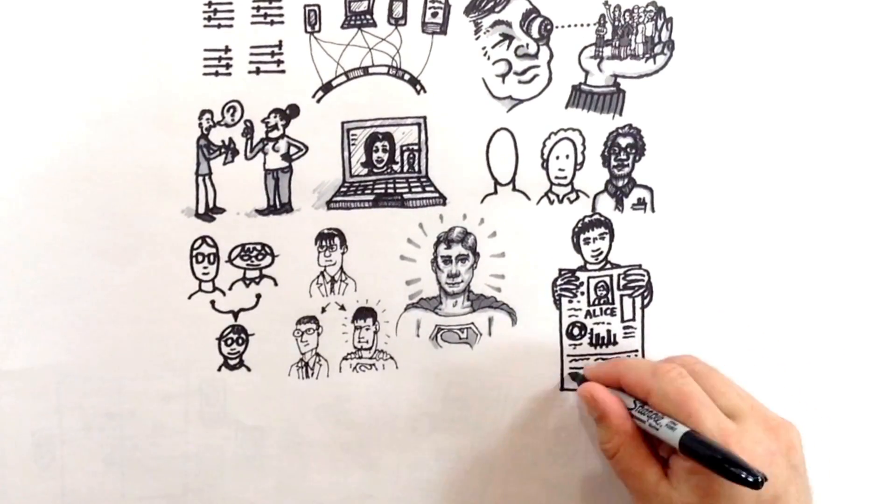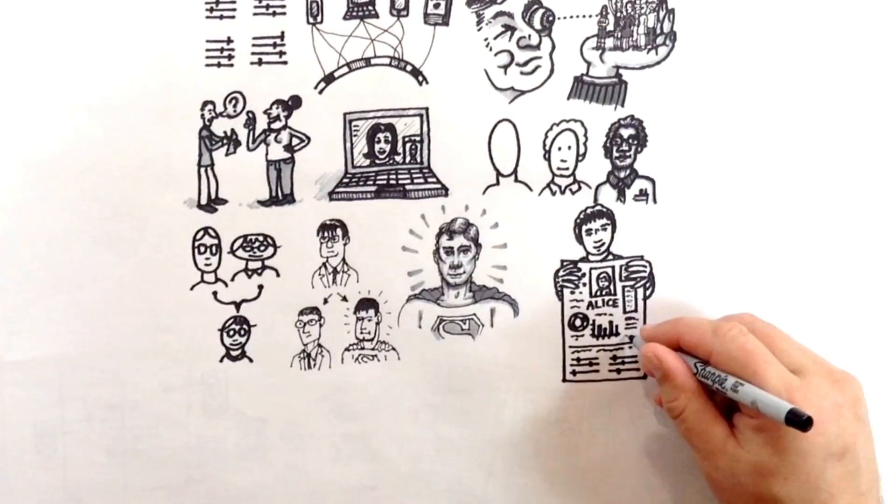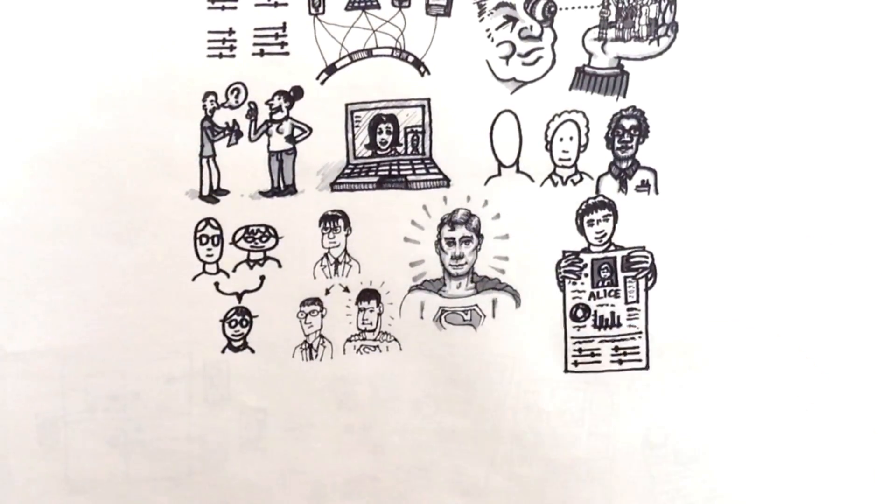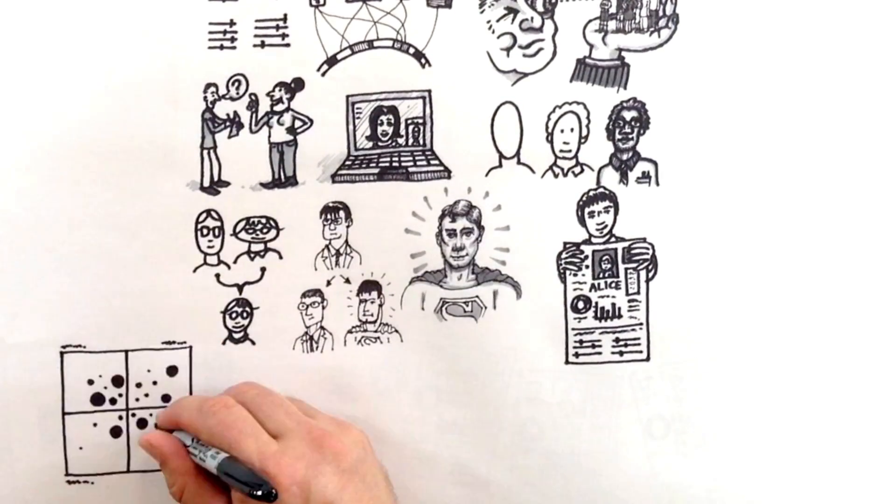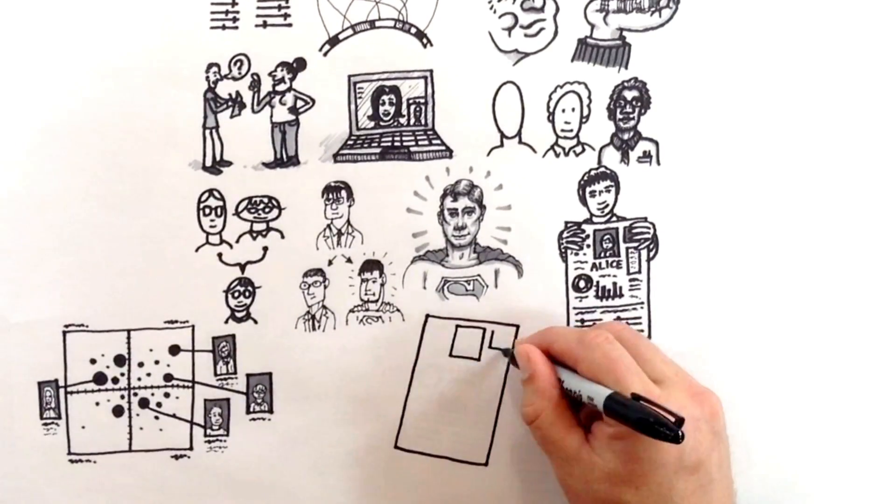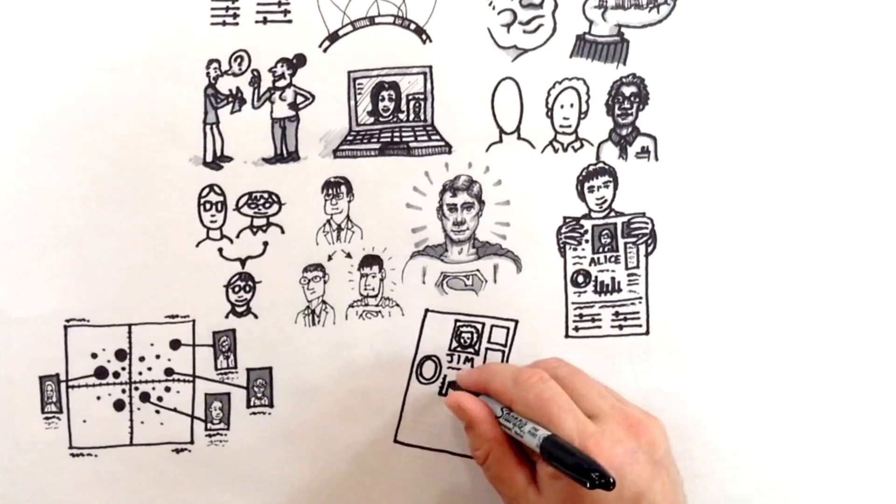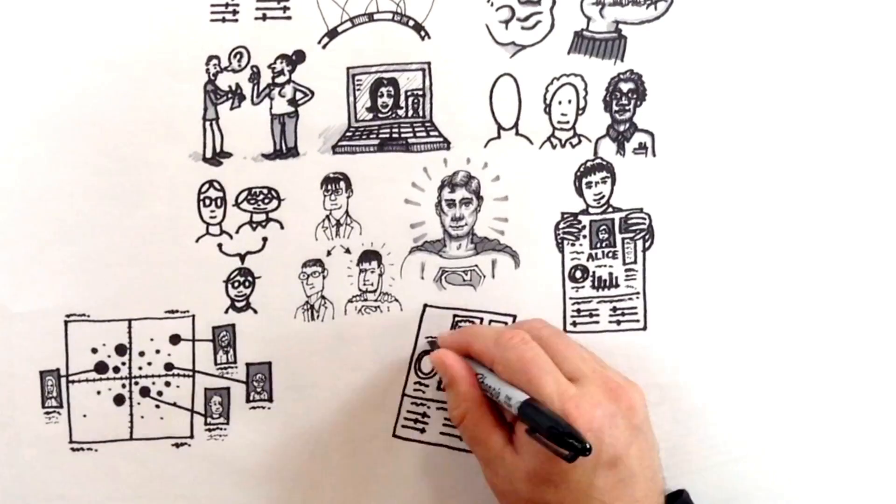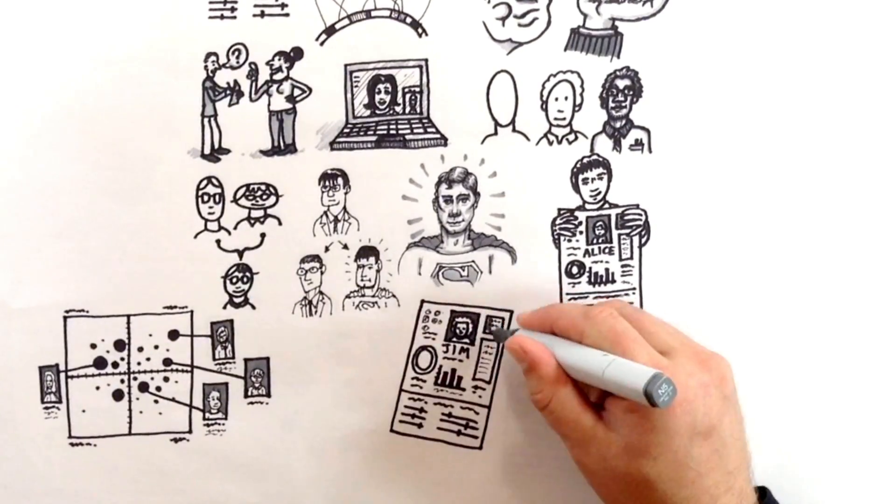You want your colleagues, at the mention of the Alice persona, to picture Alice and recall what she represents. Once you've created your personas, you can use them to design for customers with accuracy and confidence. For example, we can say, this is a feature that Alice would use, but one that Jim might not discover in his typical use of our app.